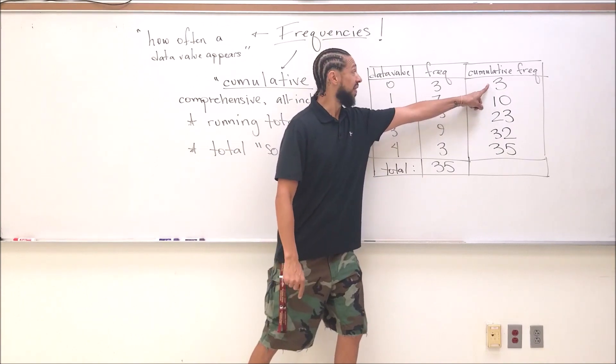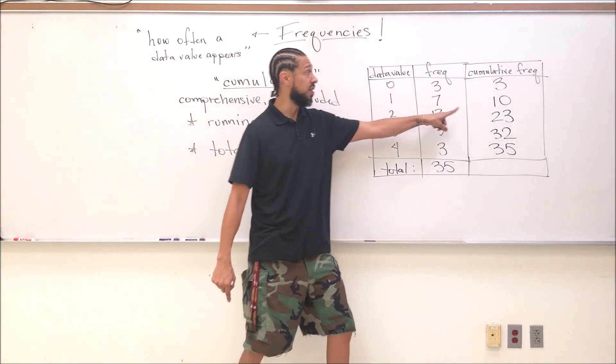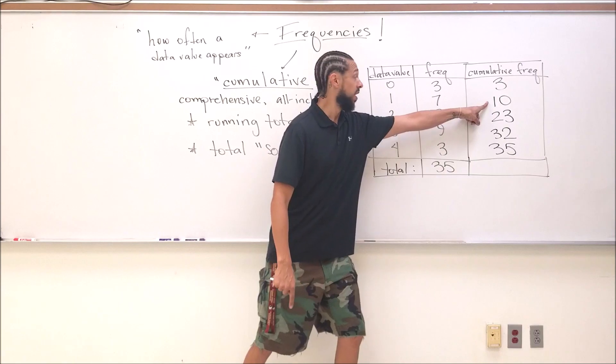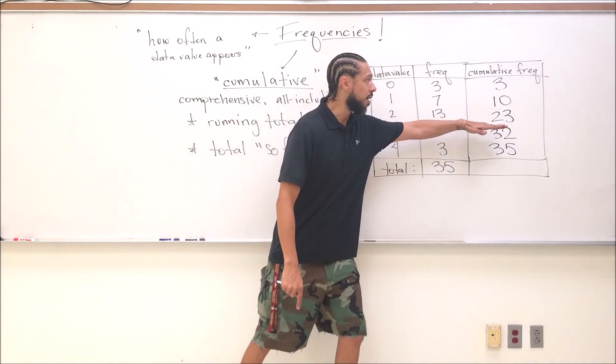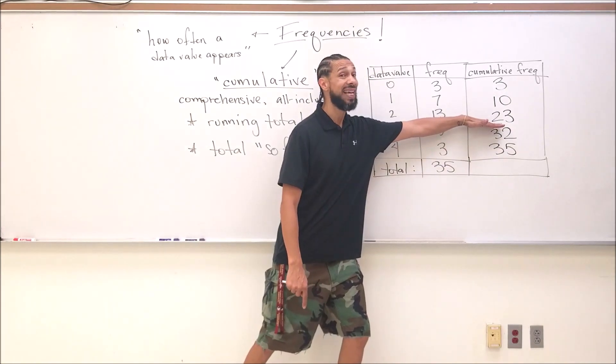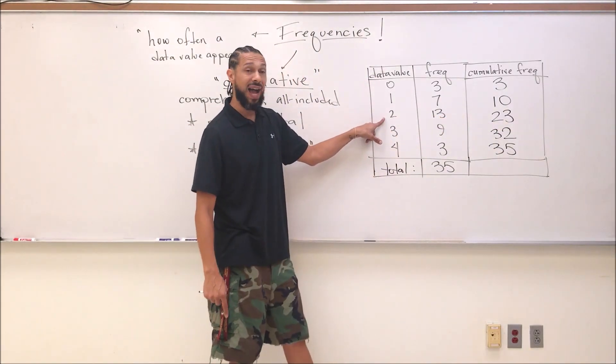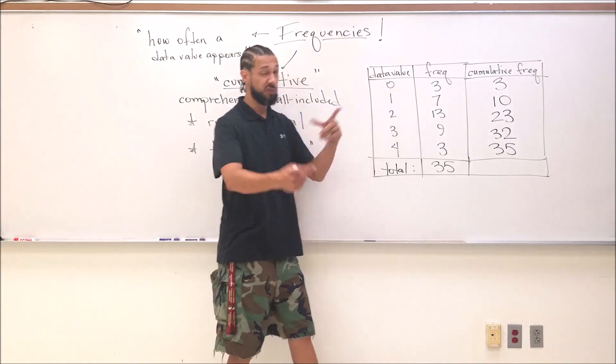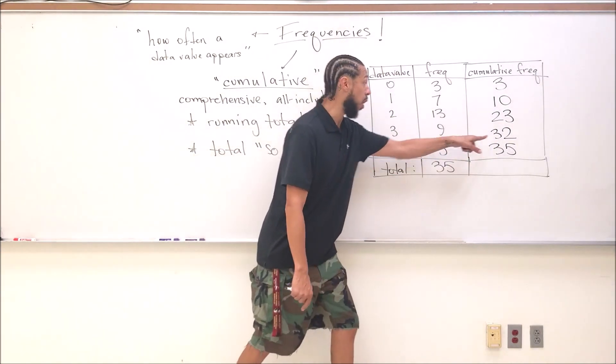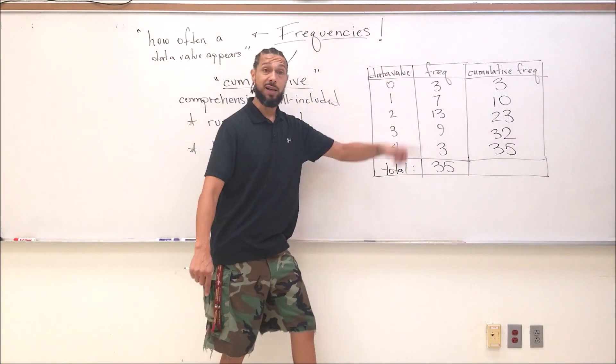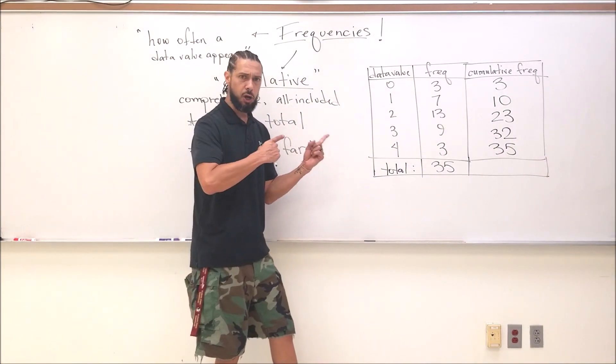One more time: I started with three data values, they were all zeros - there's my first three data values. Then I added seven ones to make my total number of data values 10. I added 13 twos, total number of data values is 23. So right now, 23 of my data values are value two or less. You're going to see questions like that. 32 of my data values are three or less. That's exactly right. You can go backwards in this chart also.